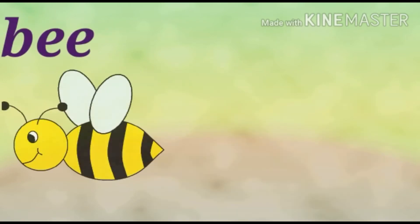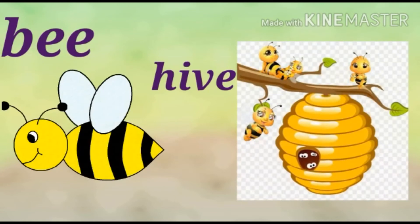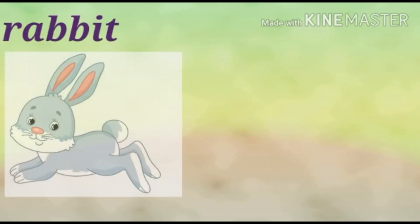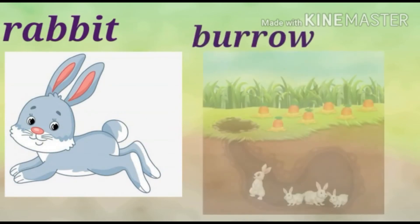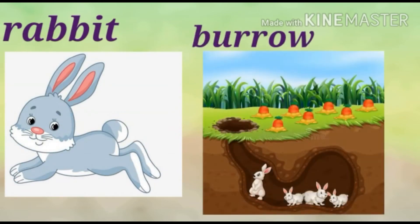Number 4 is bee. Bee lives in a hive. Number 5 is rabbit. Rabbit lives in a burrow.